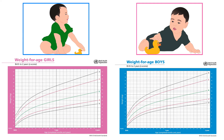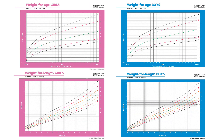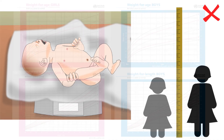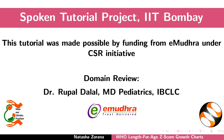The second Z-score growth chart is the Weight for Age growth chart, and the third is the Weight for Length growth chart. They are discussed in another tutorial in the same series, along with related growth problems. This brings us to the end of this tutorial. Thank you for joining.